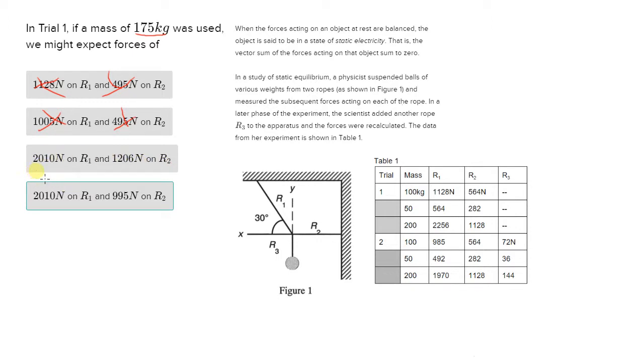Answer choice C, they gave us 210 Newtons on R1. Sorry, 2010 Newtons on R1. And that actually makes sense. It's a little less than the force on R1 when there's 200 kilograms for the mass, and it's higher than the force on R1 when there's 100 kilograms for the mass. So that answer choice could actually be feasible as a possible value for R1 at 175 kilograms.